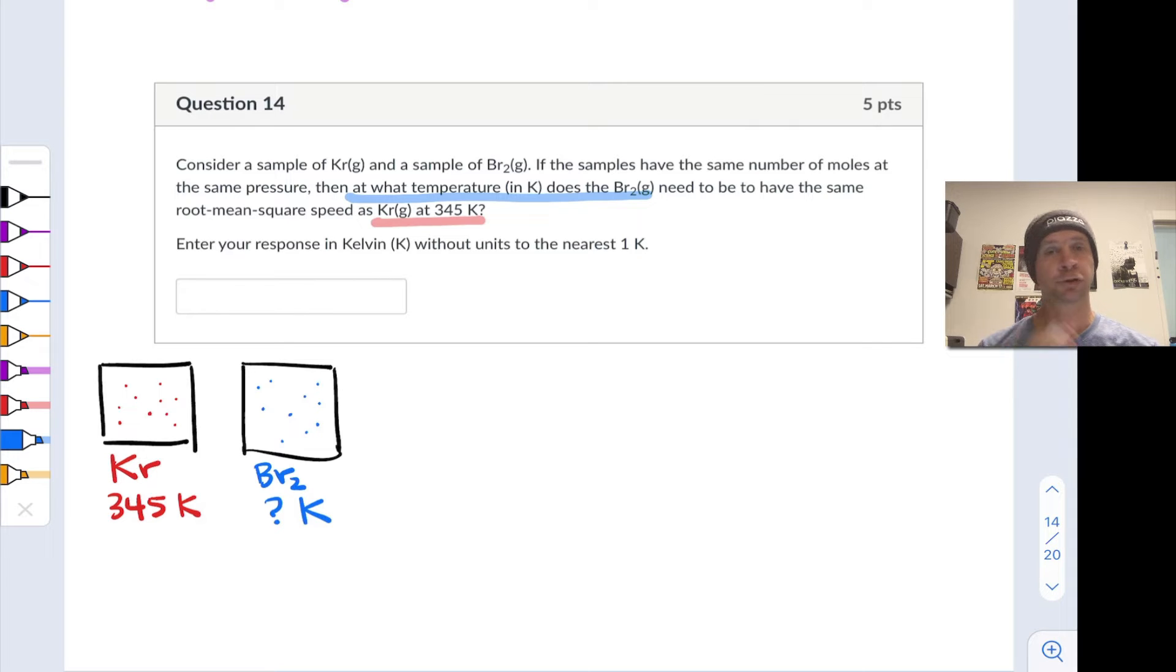In this problem, we're asked about two samples of gas. A sample of krypton at 345 Kelvin, representing that in red, and a sample of Br2 gas at some unknown temperature. We're trying to find that temperature. And the temperature we're targeting here is the temperature at which the bromine gas, the Br2 molecules, have the same root mean square speed as the root mean square speed of the gas particles in the krypton sample at 345 Kelvin. So this is a question that's going to draw on our understanding and facility with the kinetic molecular theory and some of the equations underlying that theory, particularly the root mean square speed or velocity.